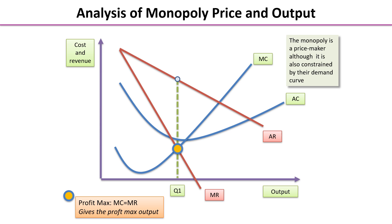Then take the line all the way straight up to the average revenue curve. When you do that, you can then find the price — the profit maximizing price that this monopolist will use.